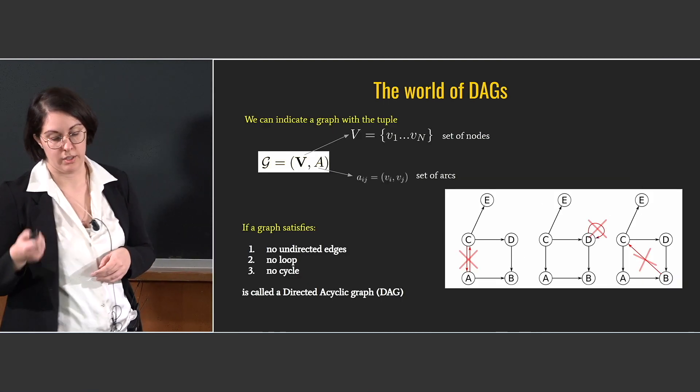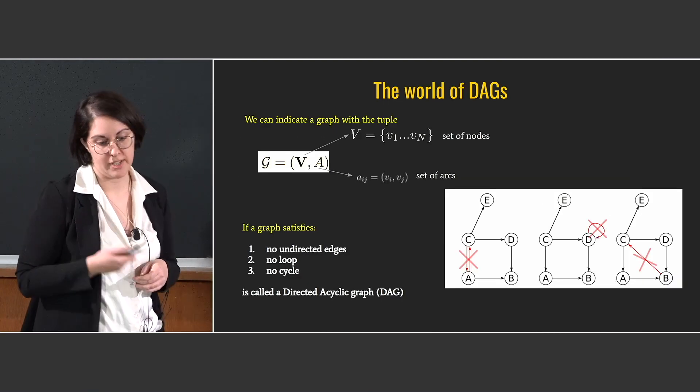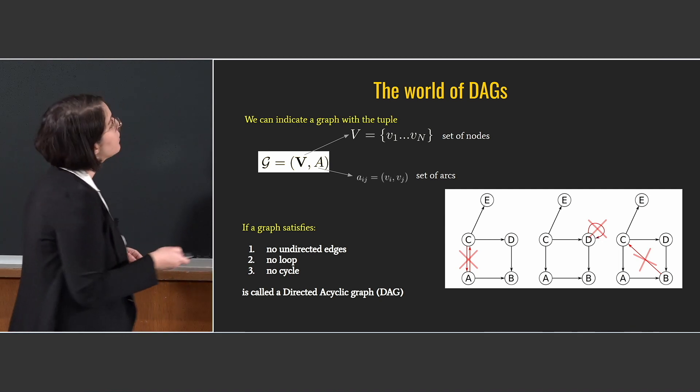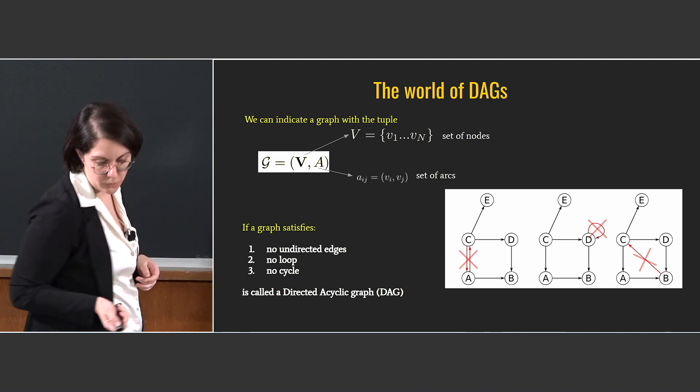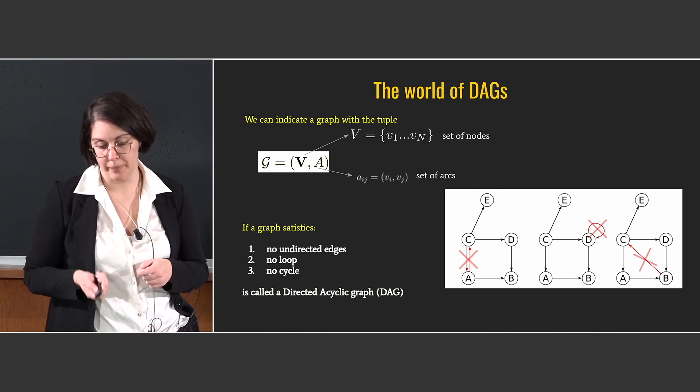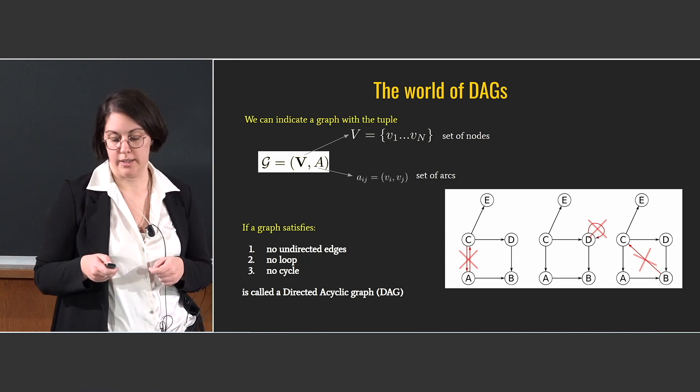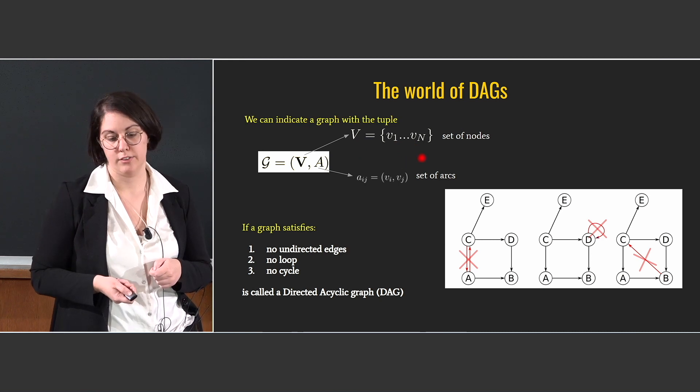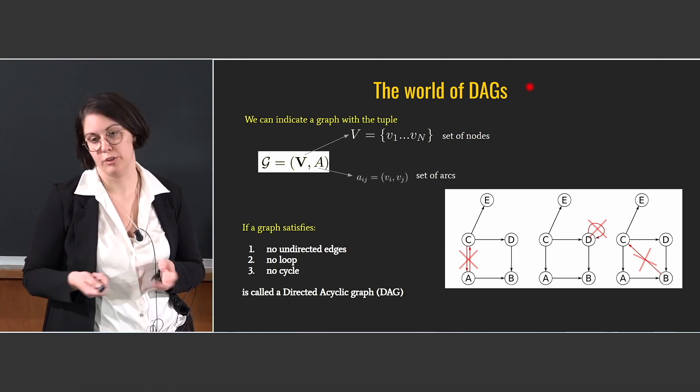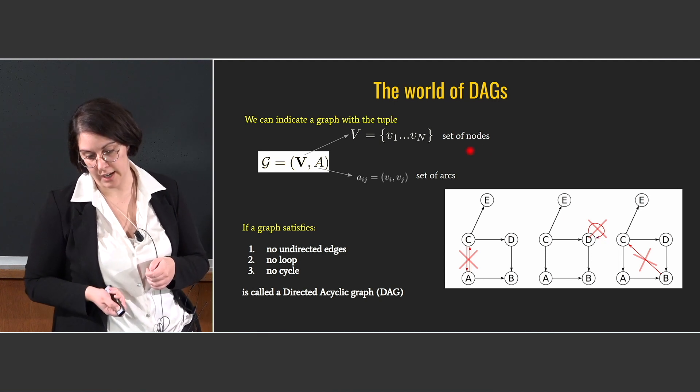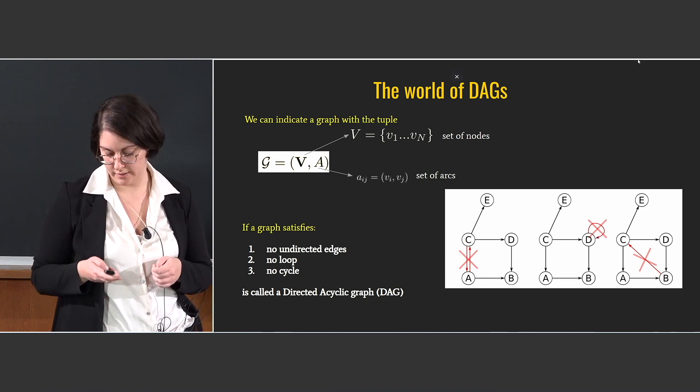So here we give a definition of directed acyclic graph, so we have these properties to be followed: no undirected edges, no loop, and no cycle. In the graph, we encode the information of the observational data set associating to the nodes the variable or the feature in the data set, and describing with the arcs, the directed arcs, the conditional dependencies among them.